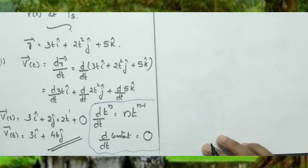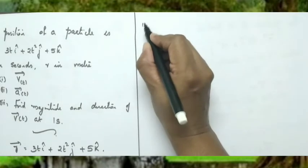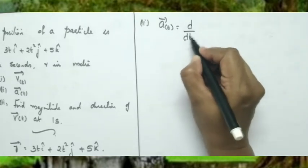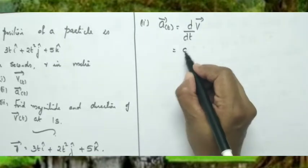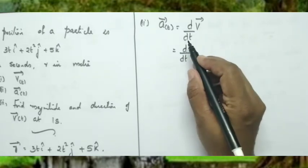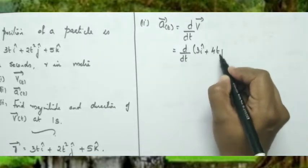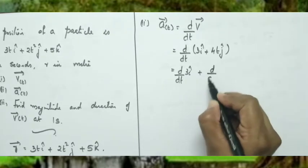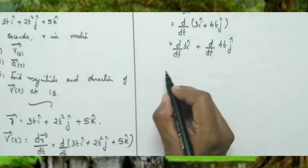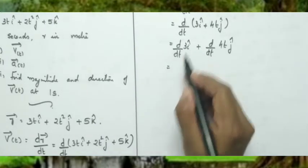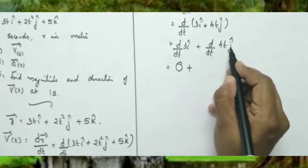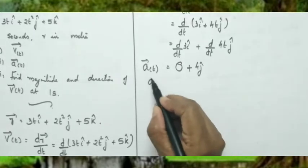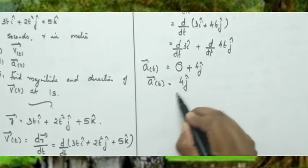Now for the acceleration: acceleration is the rate of change of velocity, so a = dv/dt = d/dt of (3i-cap + 4t j-cap). The term d/dt of 3i-cap is 0 (constant), and d/dt of 4t j-cap equals 4 j-cap. Therefore the acceleration vector is a(t) = 4 j-cap.